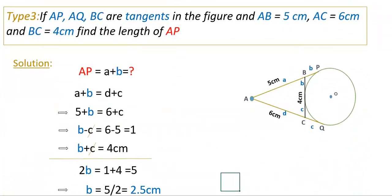Type 3 problem: If AP, AQ, and BC are tangents in the figure, AB = 5 centimeters, AC = 6 centimeters, and BC = 4 centimeters, find the length of AP. Assume segments as A, B, C, D. You need to find A + B. Since A = 5 cm, you only need to find B to get AP.